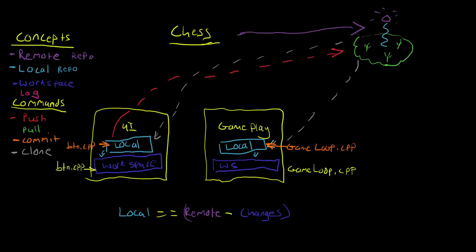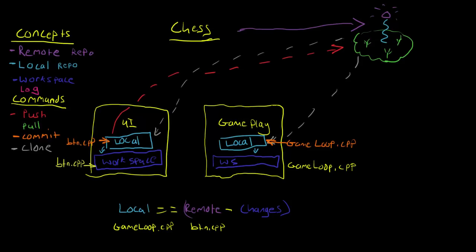So let's write this out. Your local has game loop and the remote has button. And I put minus your changes here because the remote doesn't care what changes that you make, but it does care that your local repository equals the remote. So what you really need to do is sync your local repository with the remote. And we can do that with the pull command and pull is basically going to pull all of the changes that are in the repo that are not in the local repository and put them into the local repository. It will update his local to resemble the remote.